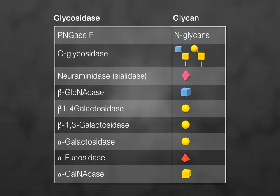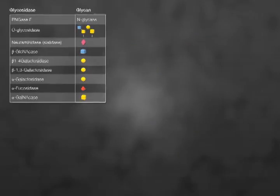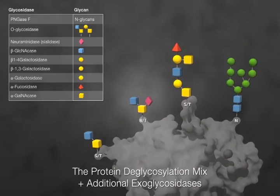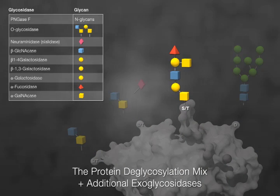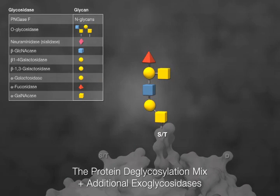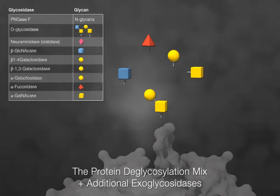Additional exoglycosidases, for instance beta-1,3-galactosidase, alpha-galactosidase, and fucosidase, can be used along with the protein deglycosylation mix. Some glycoproteins have O-glycans that are resistant to the protein deglycosylation mix. However, additional glycosidases can be used along with the protein deglycosylation mix to facilitate the removal of the glycan. In this example, fucosidase and alpha-galactosidase are used and the resistant glycan is removed.